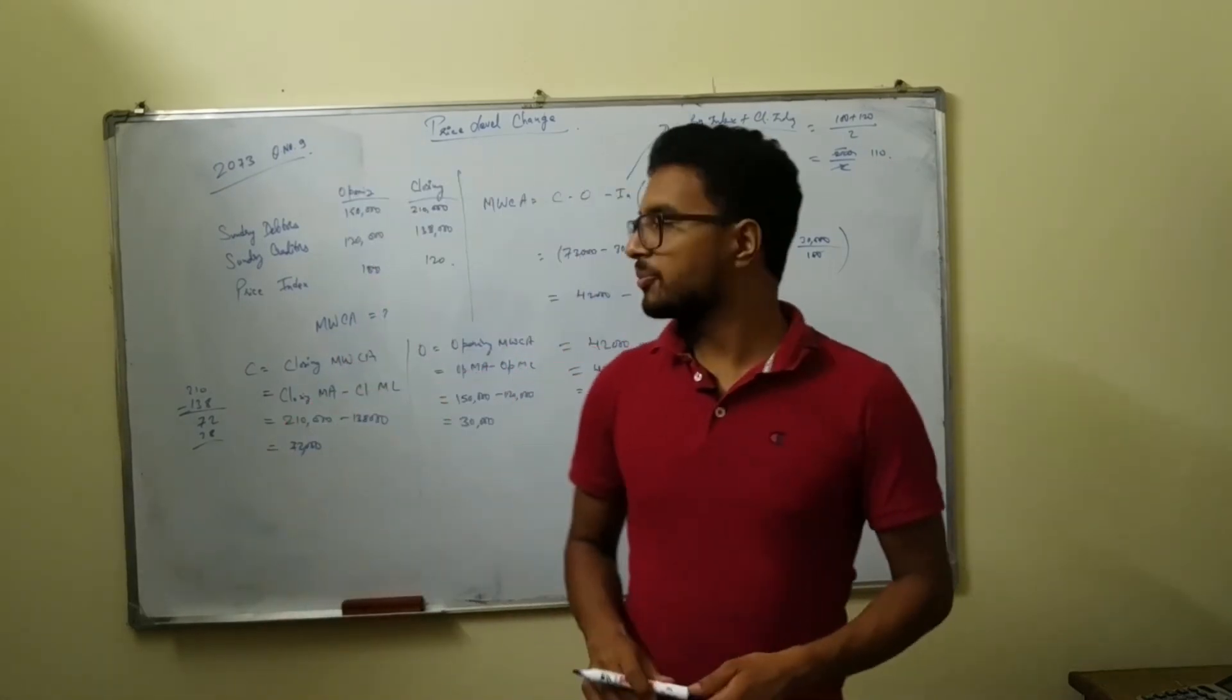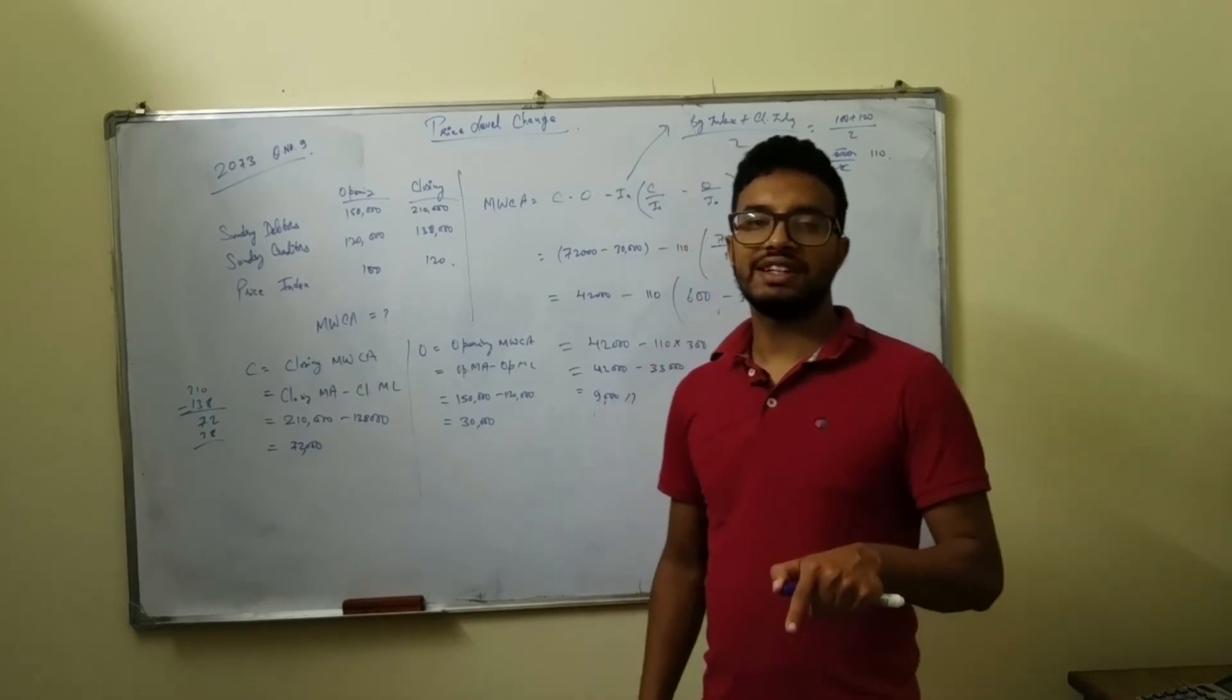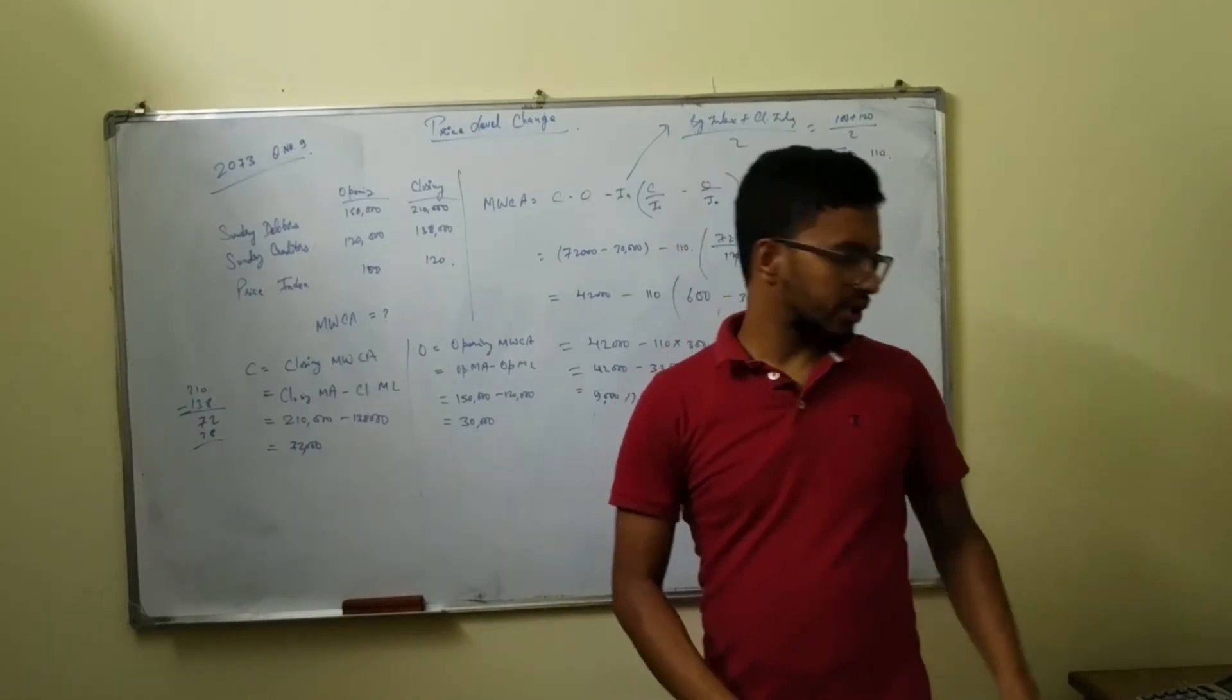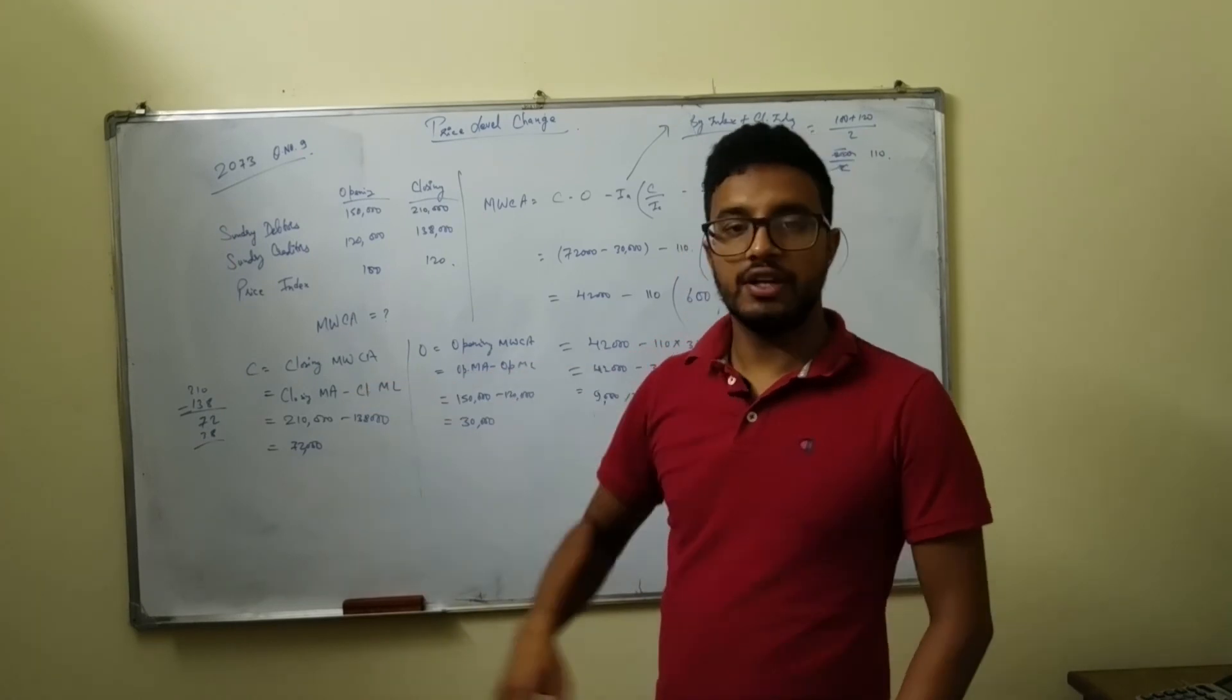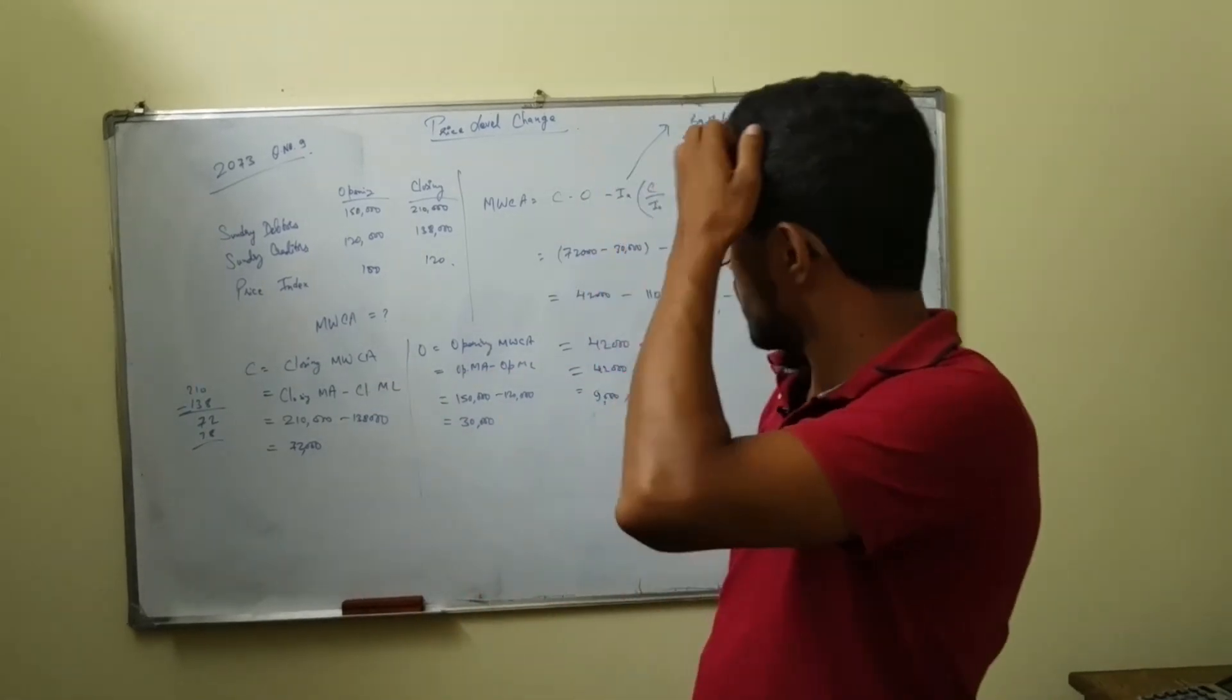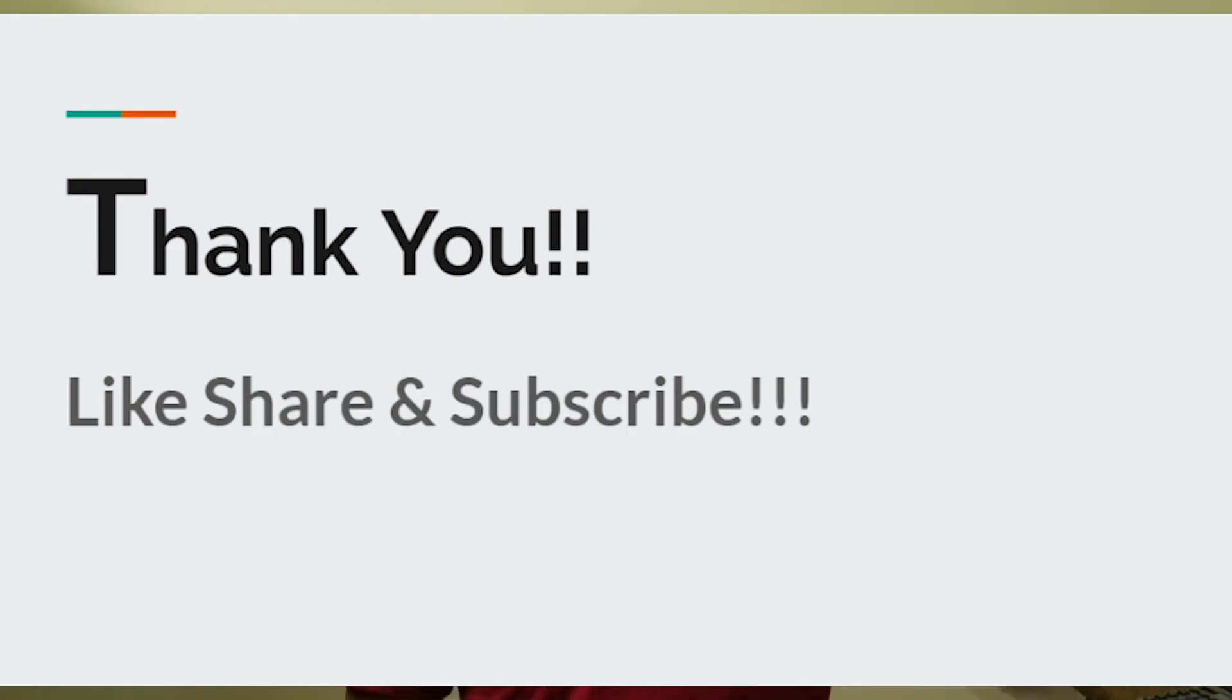So this is how we actually solve this kind of problem, MWCA. Always remember, C is not closing stock, it's closing monetary assets minus closing monetary liabilities. If you have any other questions, please comment down below. Until next time, bye bye.